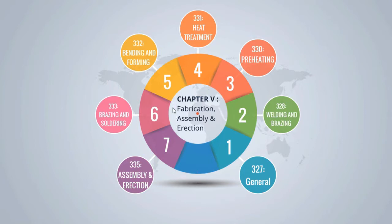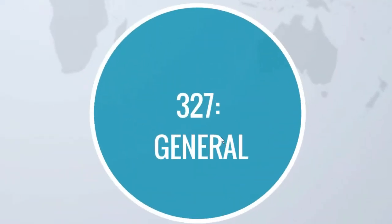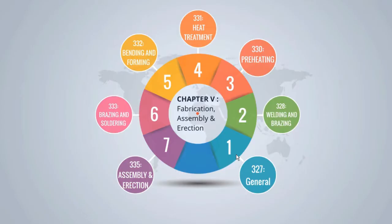The fifth chapter of ASME B31.3 2016 Edition of the Process Piping Code is divided into seven paragraphs, from 327 to 330. Para 327 is a general and introductory paragraph. Metallic piping materials and components are prepared for assembly and erection by one or more of the fabrication processes covered in paras 328, 330, 331, 332, and 333.